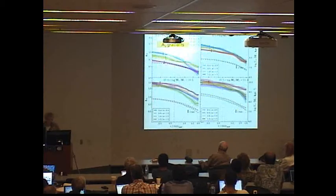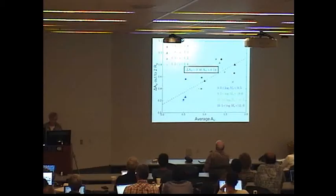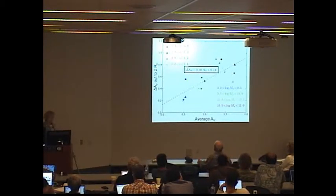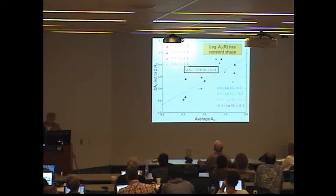Here's a picture of absorption gradients, and they all seem to have about the same functional form, especially if you think in terms of log AV rather than just AV. Just to illustrate that, here is an average AV, and a change in AV out to two effective radii, and you can see that they're sort of proportional to one another, reflecting the fact that in logarithmic form, the pattern of dust is similar. Log AV of radius has constant shape.